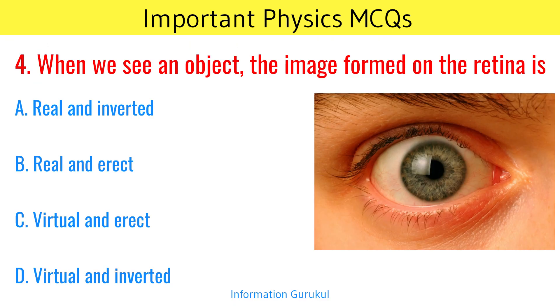When we see an object, the image formed on the retina is real and inverted.